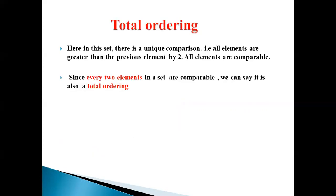Total ordering. In this set, there is a unique comparison. All elements are greater than the previous element by 2 and all elements are comparable. Since every two elements in the set are comparable, we can say it is also a total ordering.